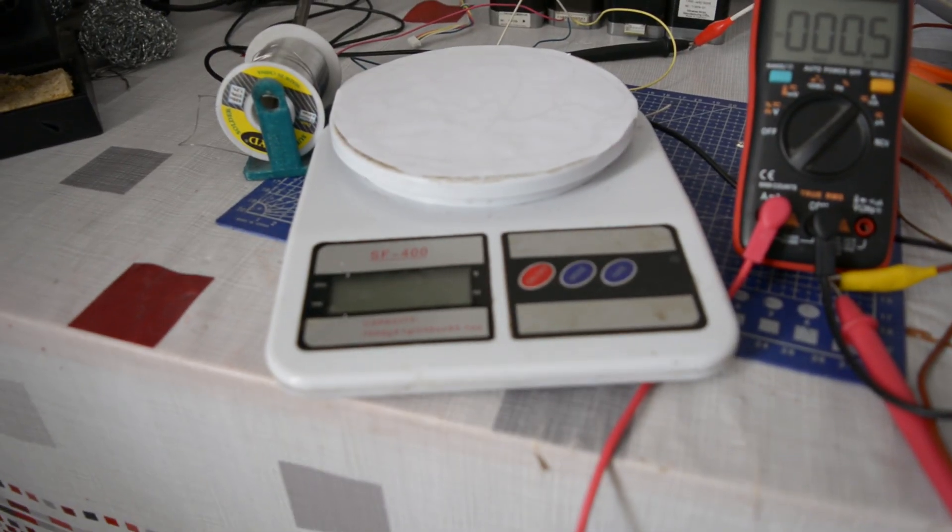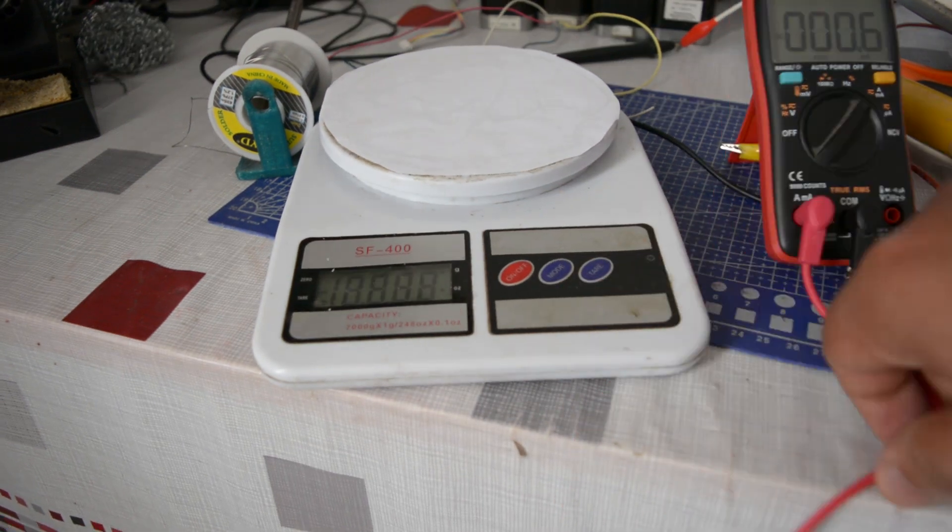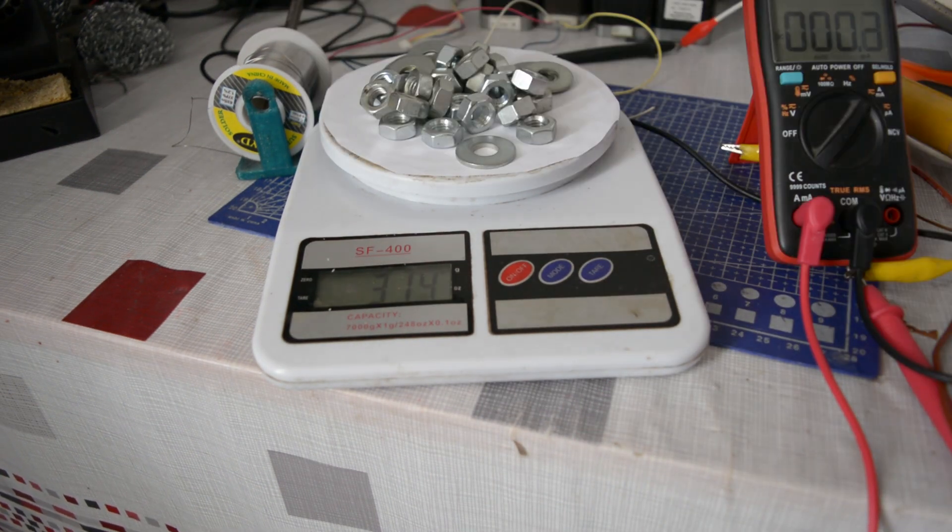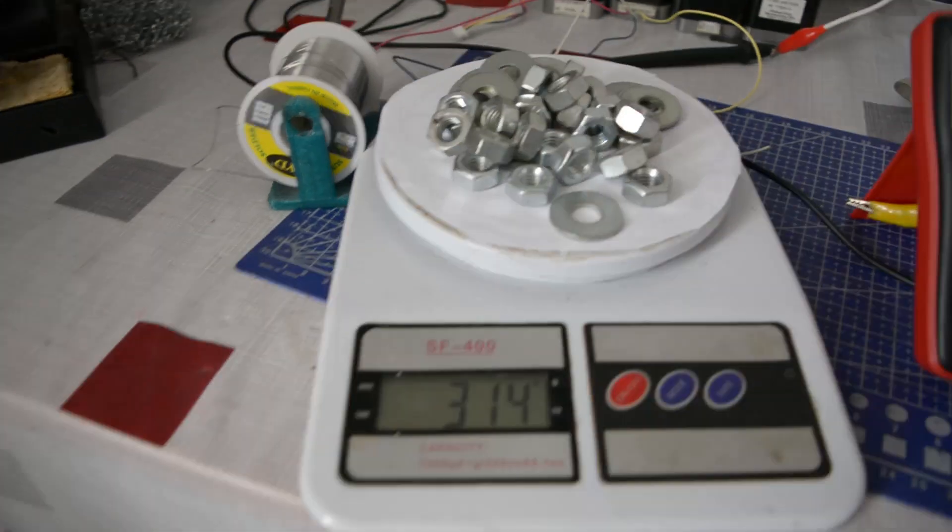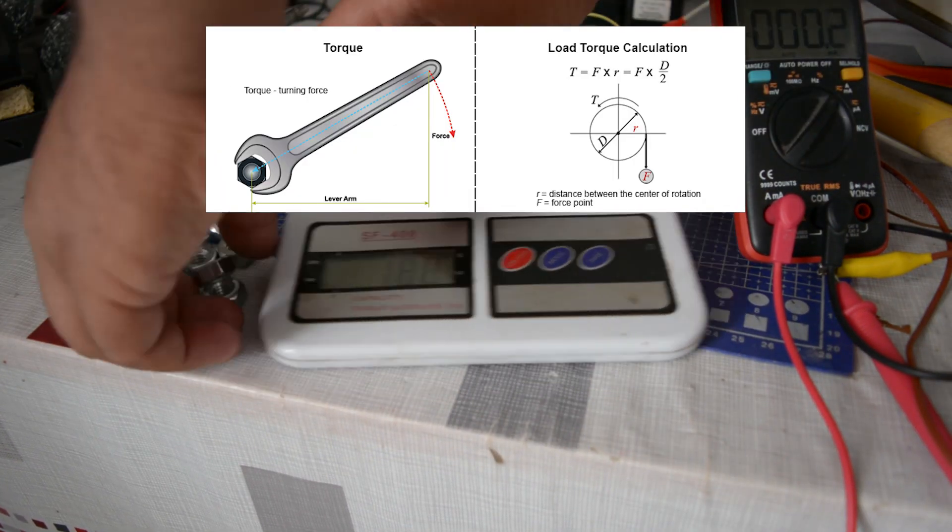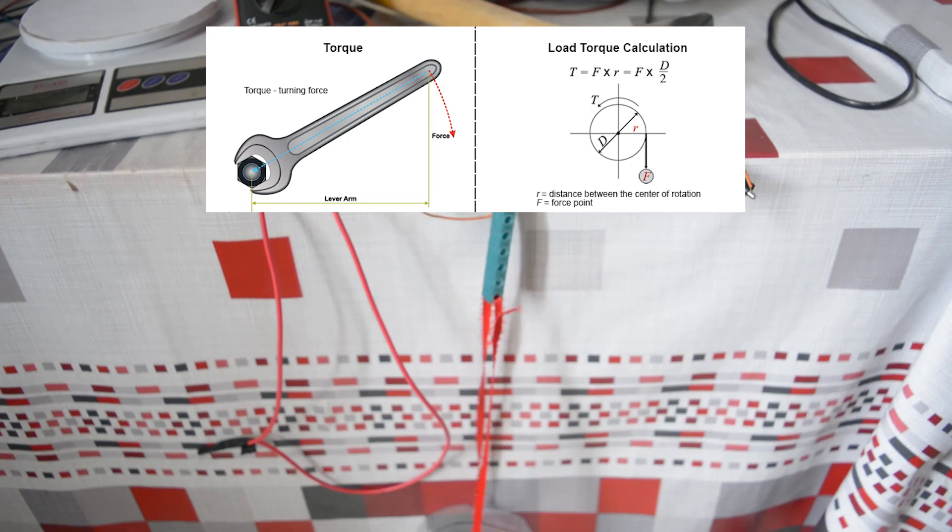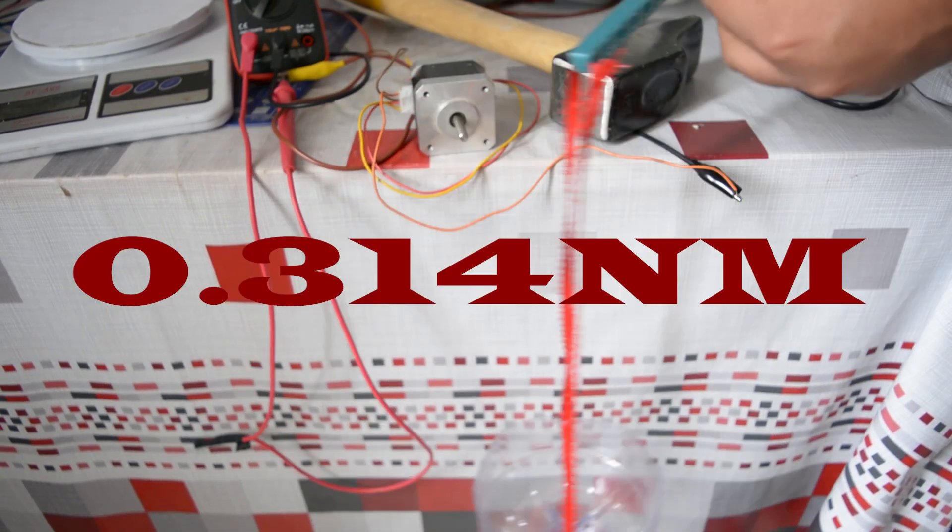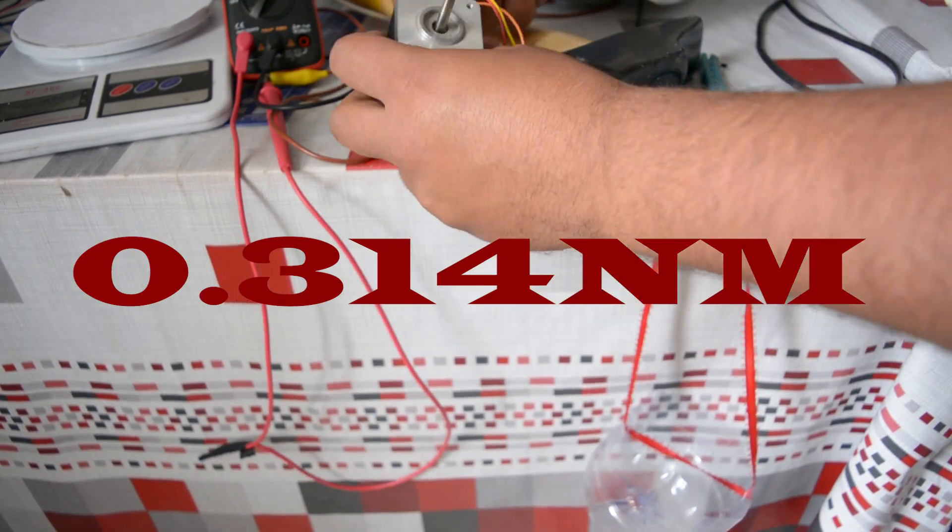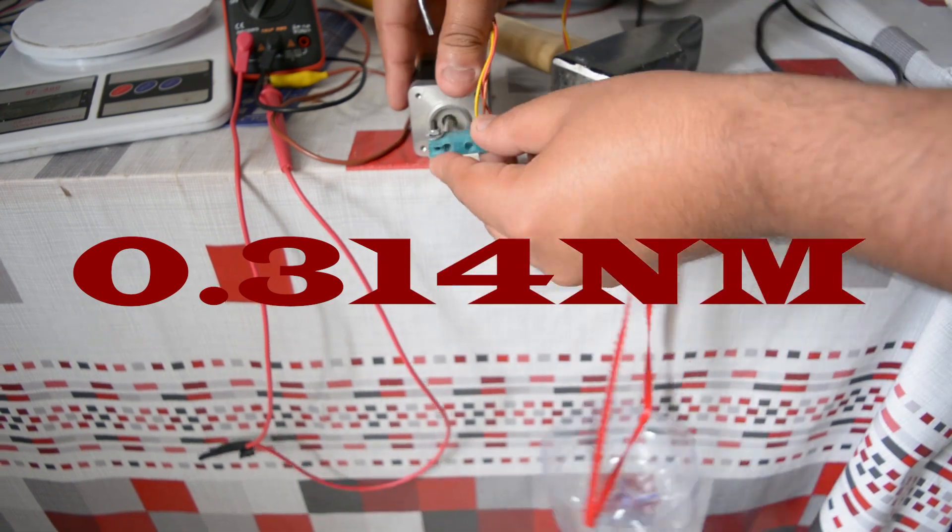Then I measured out the weight and this is the result. We get 340 grams. And since we use a 10cm shaft to get the torque, we need to divide this weight by 10. So the torque that we are getting out of this motor is 0.314 Nm, which is less than the advertised 0.4 Nm.